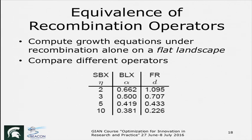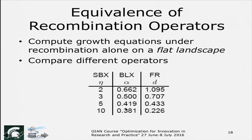We then established equivalences between operators. If you choose eta_c = 2 for SBX, that is equivalent to choosing alpha = 0.662 for BLX, not 0.5. And the D value for fuzzy recombination (FR) is 1.0 for that equivalence. So if you do not like SBX you can use BLX with alpha = 0.662, and you can also map the other way — BLX 0.5 corresponds to SBX eta_c of about 3.